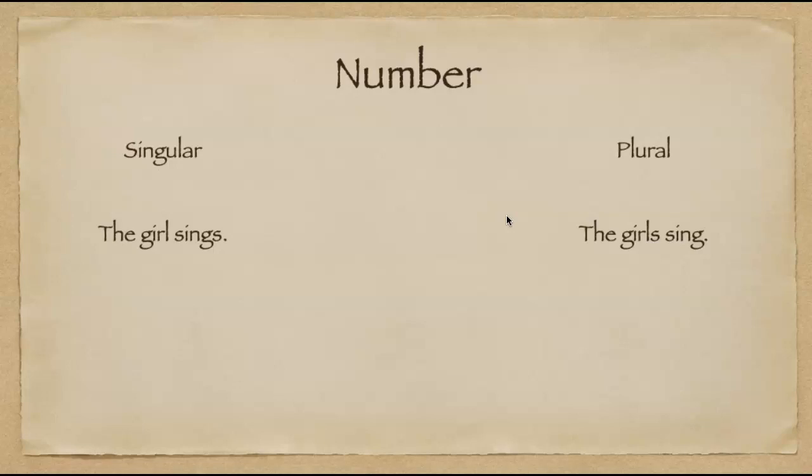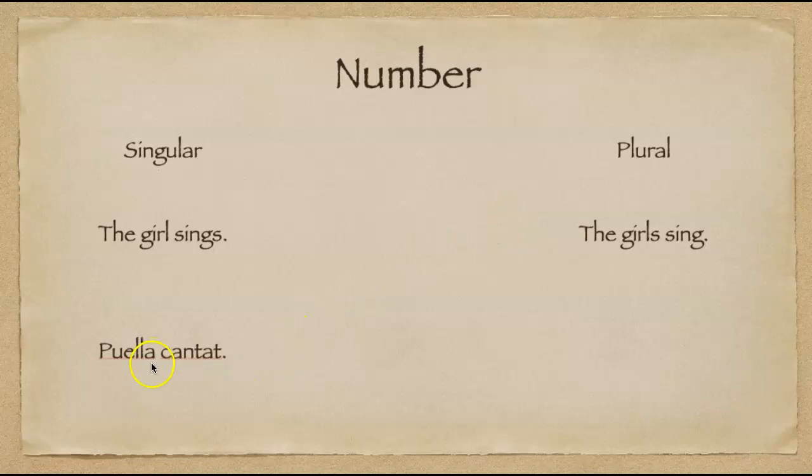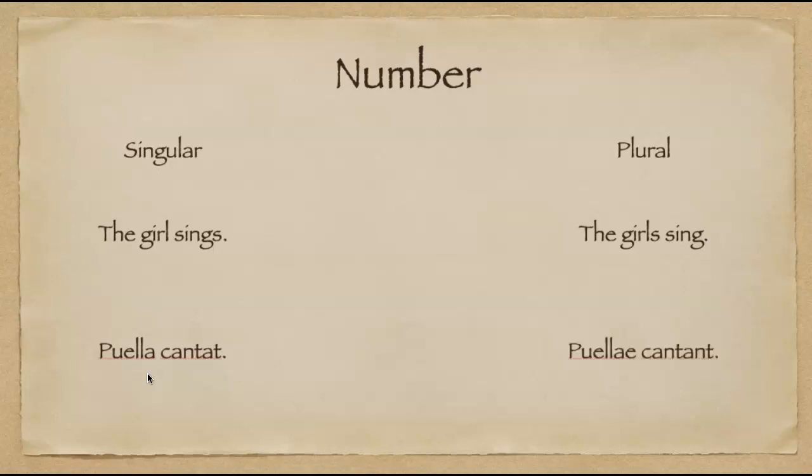This is a little bit easier in Latin because you just look to the endings and the endings are singular and plural and they have to match. So if I wanted to say the girl sings in Latin, I would say Puella cantat. Both of these are singular endings and so we have subject verb agreement. And if I wanted to make it plural, Puellae cantant. Both of these are plural endings. So again, we have subject verb agreement.